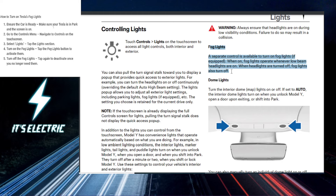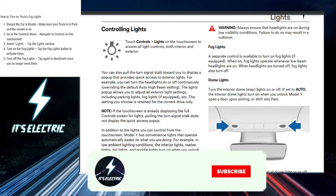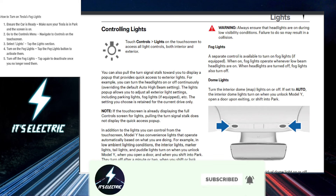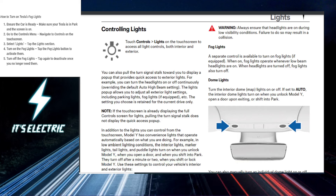When you're done with the foggy conditions, you can simply return to the lights menu and tap the fog lights button again to turn them off. And that's it! Go ahead and hit that link in the description to upgrade your ride even further, and make sure you subscribe to the channel.